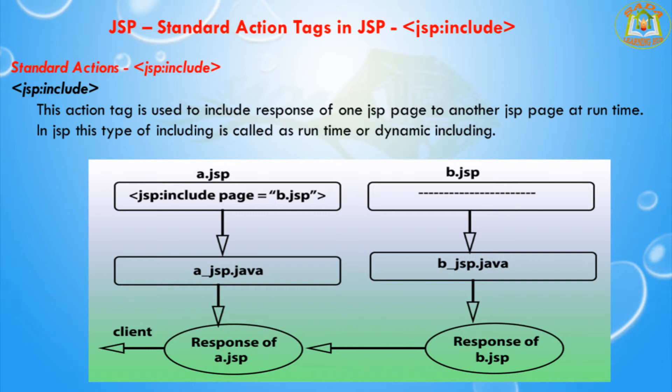Similar to the forward tag discussed in the last video — where you can use the param tag to send parameters along with a request — in the include tag, whatever parameters you want to additionally send along with the response, you can use the JSP colon param tag. If you want to send multiple parameters, you can declare multiple JSP colon param tags inside the JSP colon include tag.